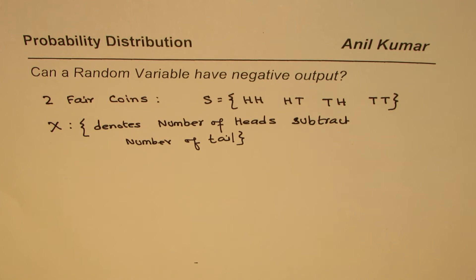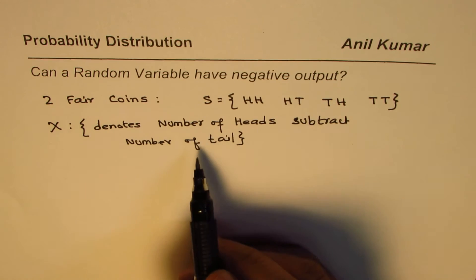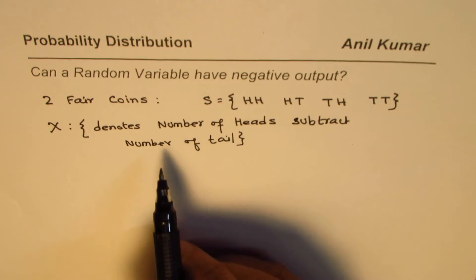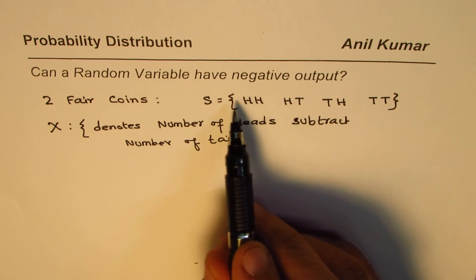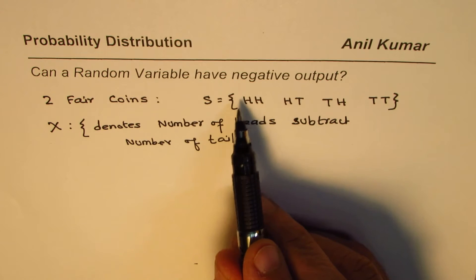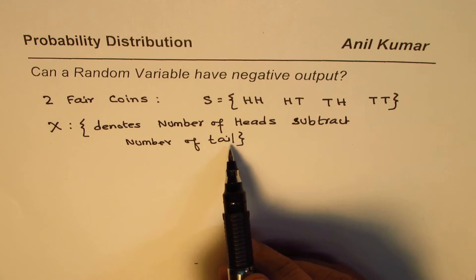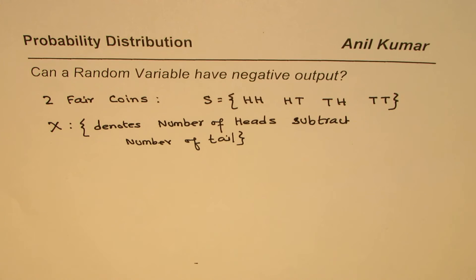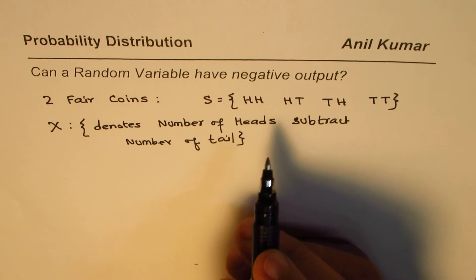It's kind of a function, as you know. For this particular function, the inputs will be the domain of the sample space and the outputs will be real numbers. The outputs of a random variable are always real numbers.